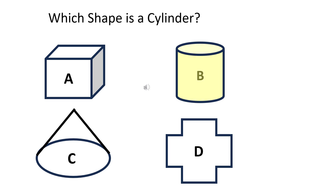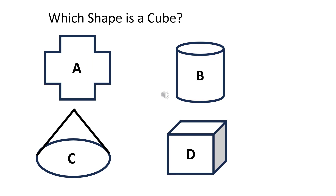The right answer is D. Which shape is a hexagon? The right answer is D.